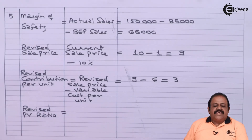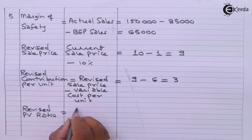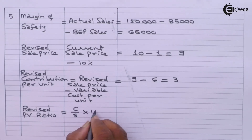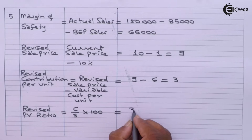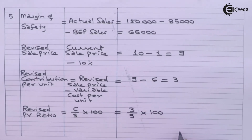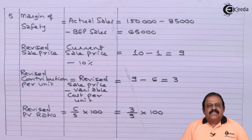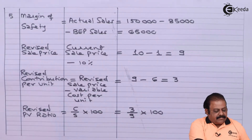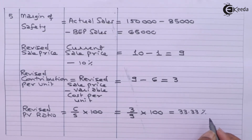We can now calculate the revised profit volume ratio. The formula is contribution per unit divided by selling price, multiplied by 100. Revised contribution per unit is ₹3 and selling price is ₹9, so revised PV ratio is 3/9 × 100 = 33.33%.